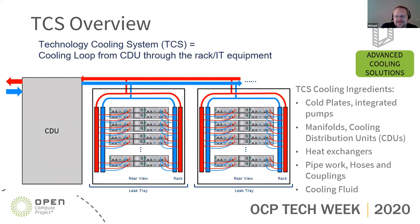Those are the main things we're looking at in the secondary loop — around the connections where we think there may be a leak risk and how we might do detection in those areas.